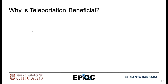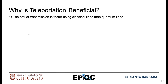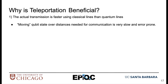Why is teleportation beneficial? First, the actual transmission itself is faster because we're using classical lines to assist us. This is because moving qubit states over large distances is a little bit slow and error prone, so transmitting classical bits to help us transmit that qubit allows us to complete the procedure of qubit transfer much quicker.